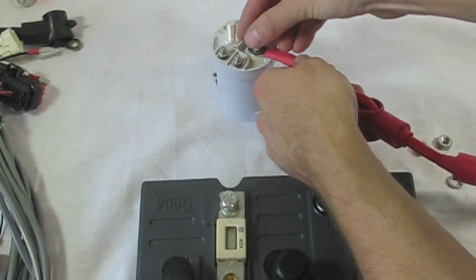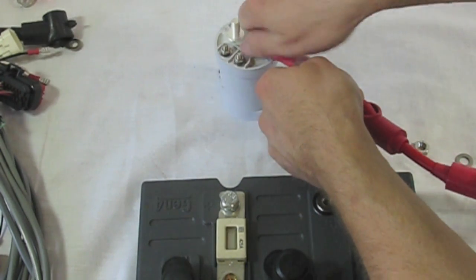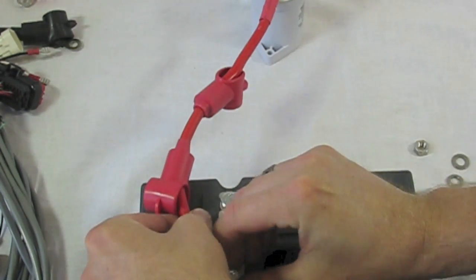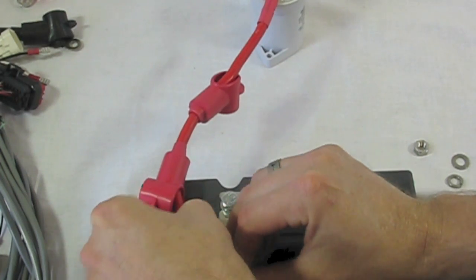The red cable that comes with the kit goes to the terminal marked B plus on the controller and also to either of the large terminals on the contactor.